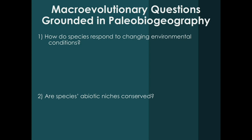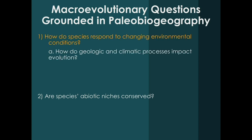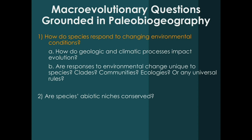I look at macroevolutionary questions grounded in paleobiogeography. The first question is: how do species respond to changing environmental conditions? Under this, we think about how geologic and climatic processes influence evolution, whether species responses to environmental change are unique to a particular taxon, to groups of species or clades, or whether entire communities respond in a locked fashion. Do ecological functional groups respond predictably, or can we uncover universal rules for how life responds to changing environments over time?